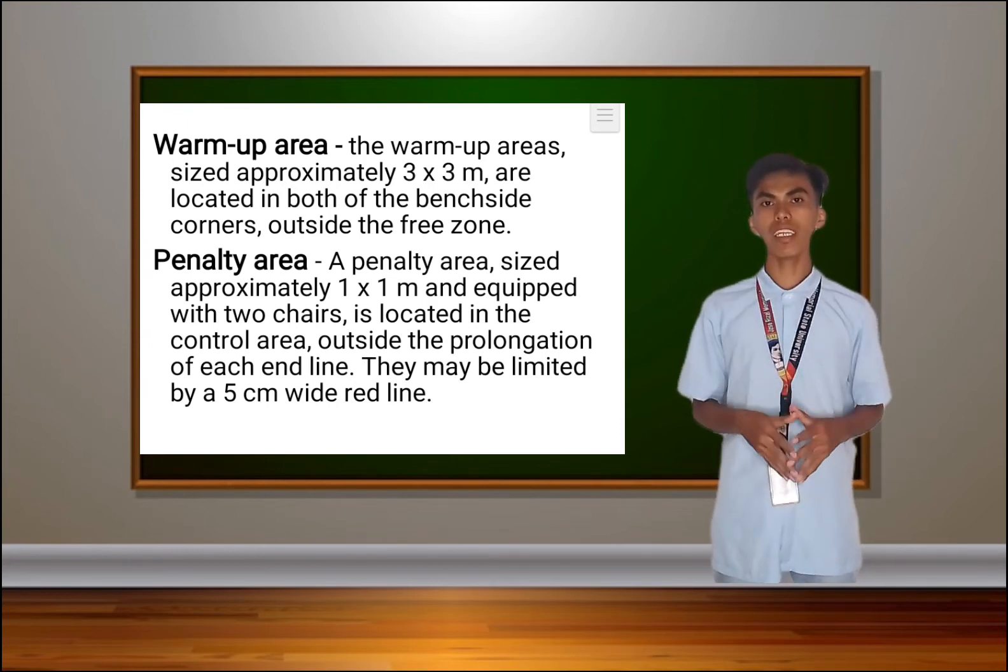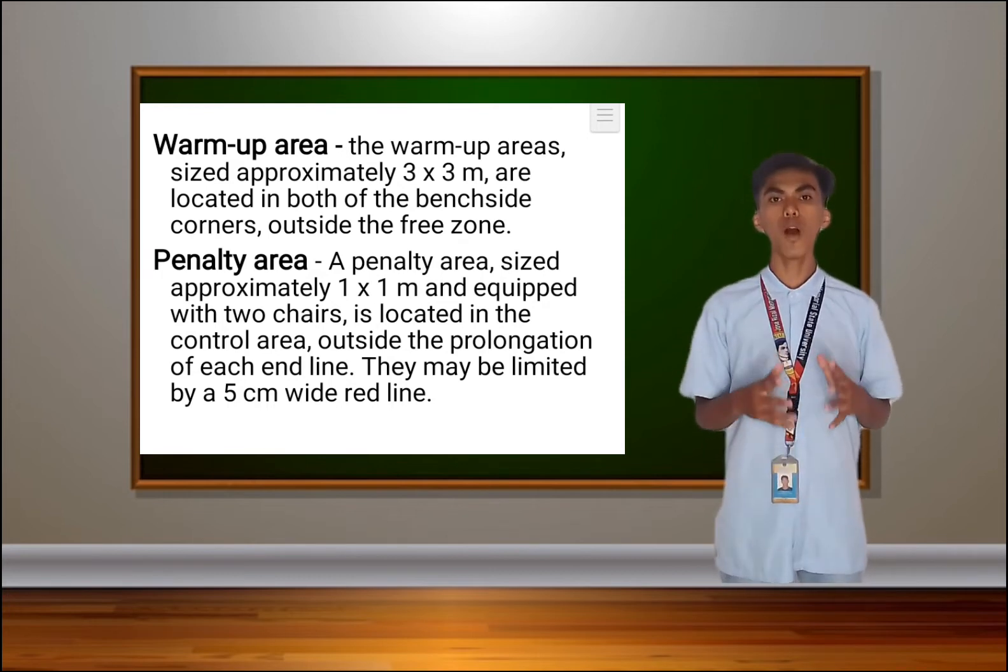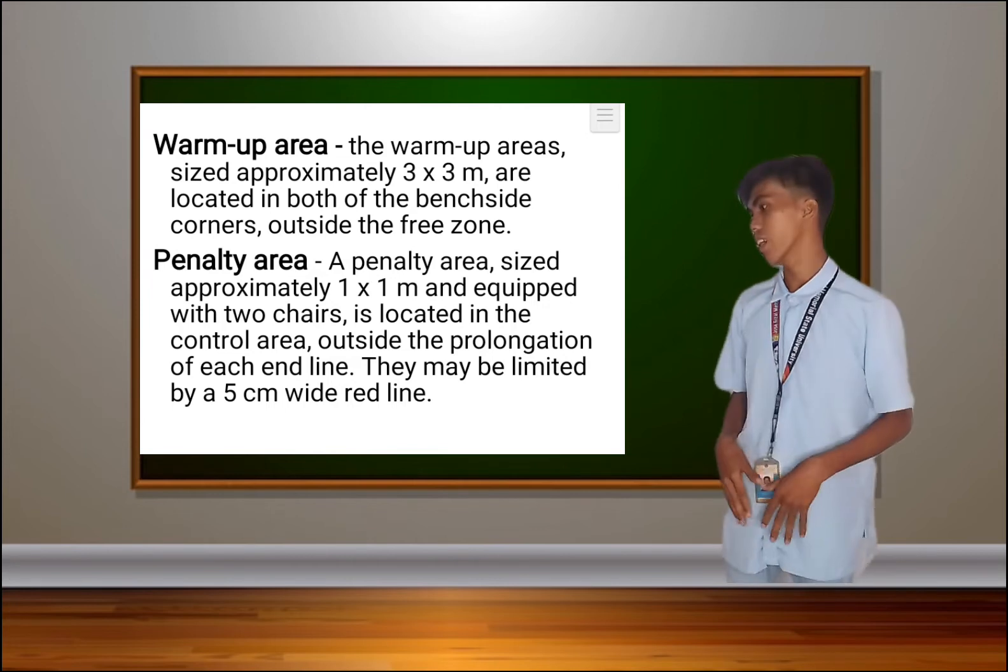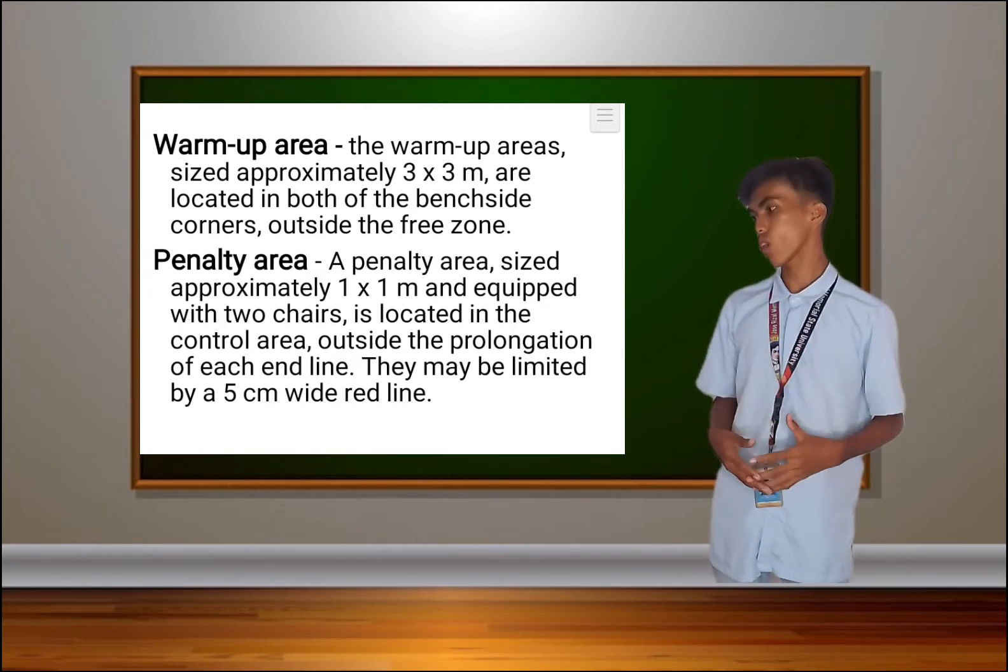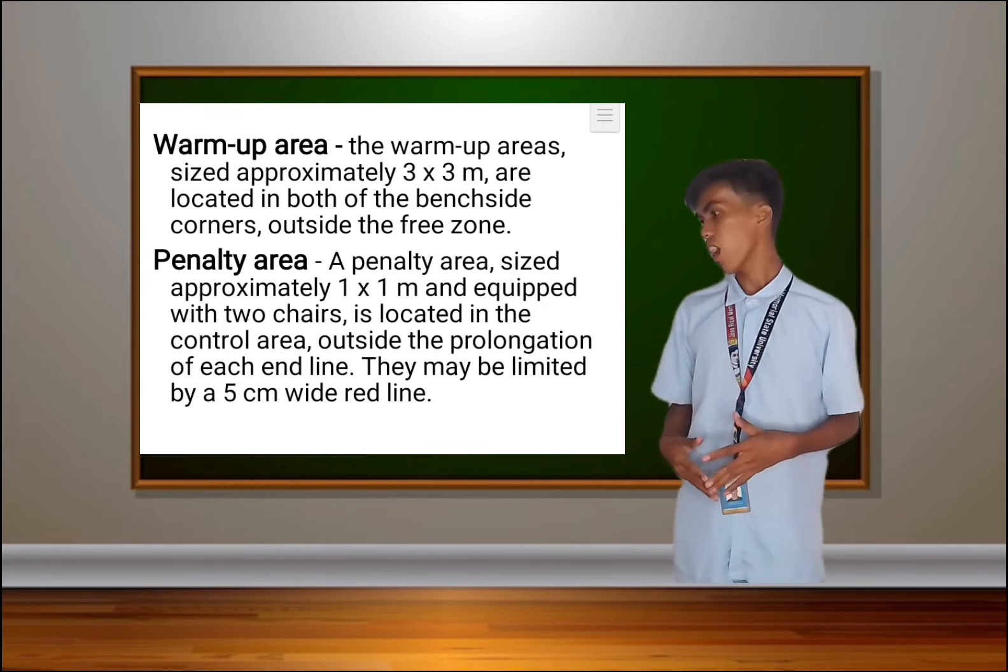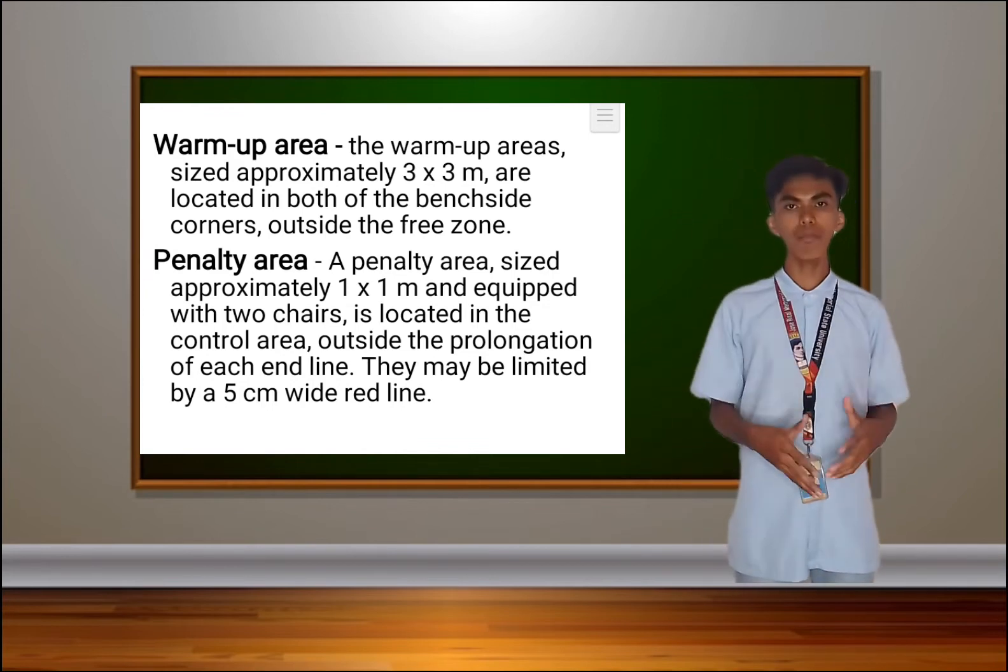Next is the penalty area. A penalty area, approximately 1 by 1 meter and equipped with two chairs, is located in the control area outside the prolongation of each end line. They must be limited by a 5 centimeter wide red line.